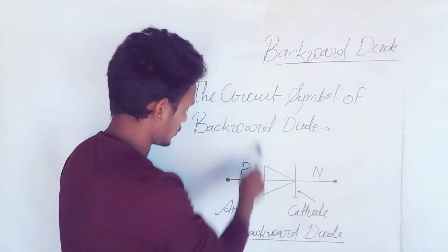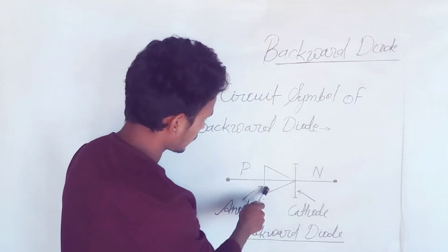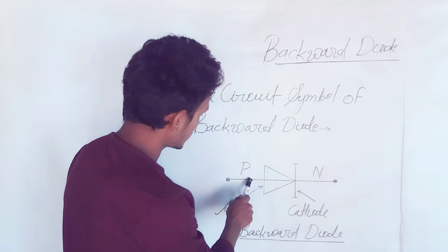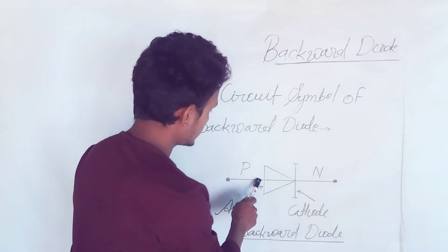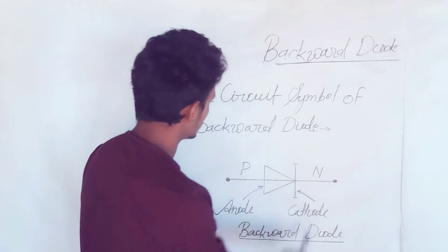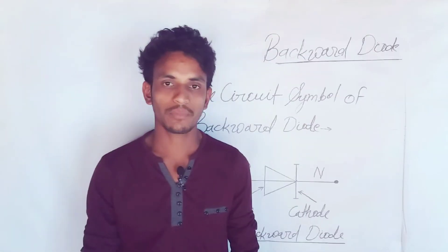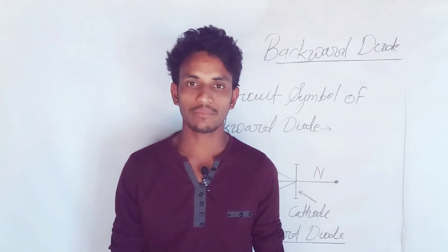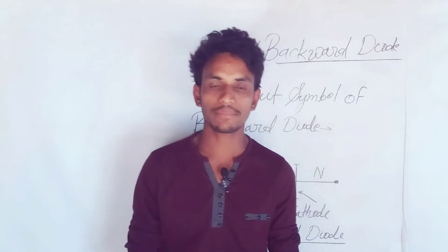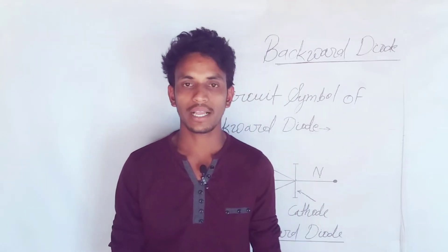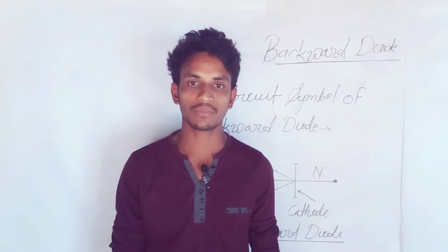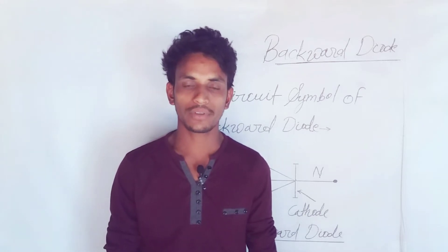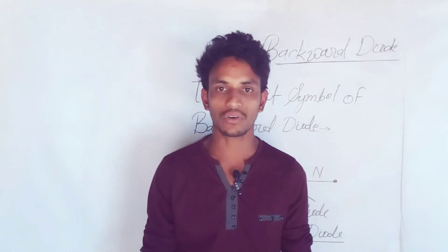The circuit symbol of the backward diode: it presents P-type semiconductor and N-type semiconductor — it is the anode and it is the cathode. The circuit symbol of the backward diode is a slightly modified symbol of a conventional PN diode. The anode terminal is the same as a conventional diode, while the cathode terminal is slightly modified in order to differentiate it from a conventional PN diode.